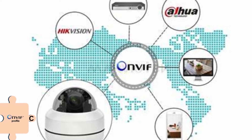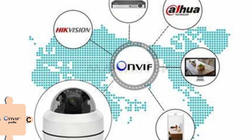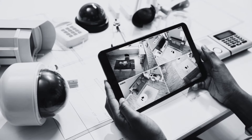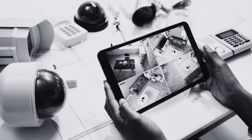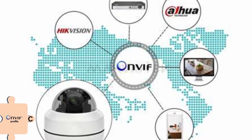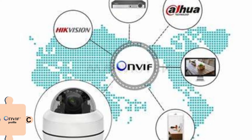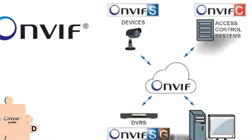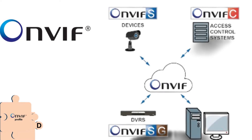Profile C helps in dealing with door control and access control functions, in addition to video streaming functions. It enables integration between CCTV systems and access control systems, and is also responsible for event and alarm management. Profile D is used for access control peripherals and is responsible for actions such as locking and unlocking.